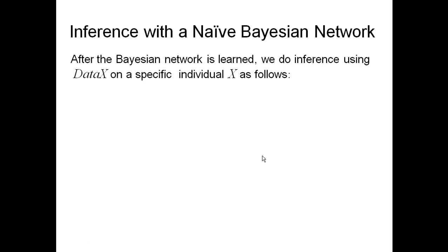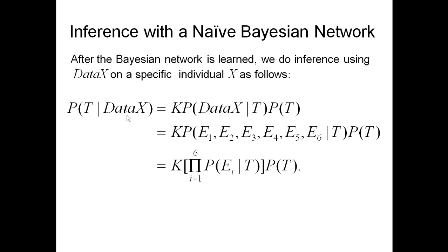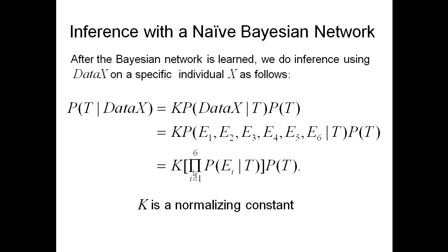After we learn the network, we do inference for a specific individual x, where x represents data on that particular individual. By Bayes' theorem, the probability of the target given the data equals the probability of data given the target times the probability of the target divided by the probability of the data — grouped here as a normalizing constant. Since in the naive Bayesian network these variables are independent conditional on T, this probability is the product of these individual probabilities, and these values are stored in the network.